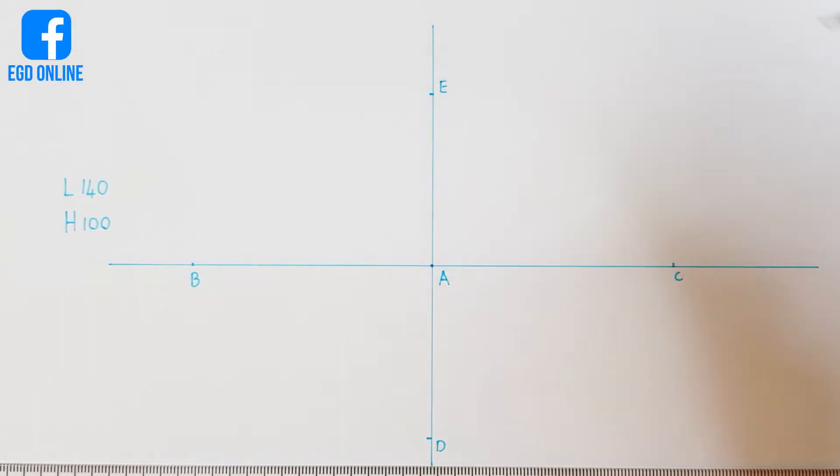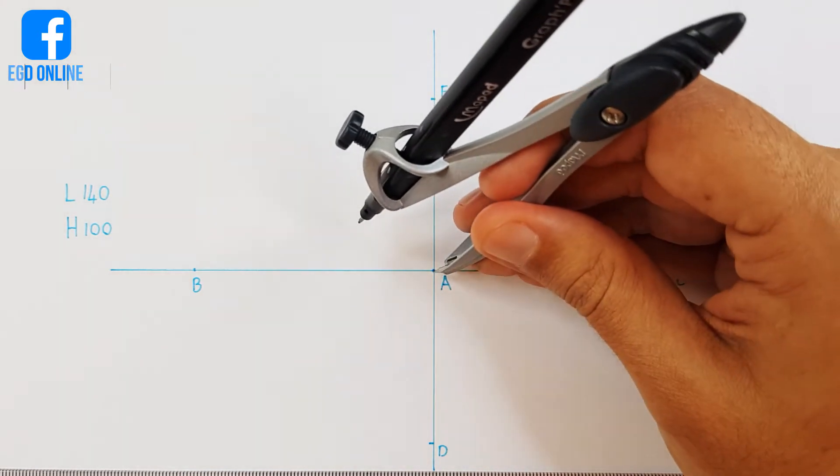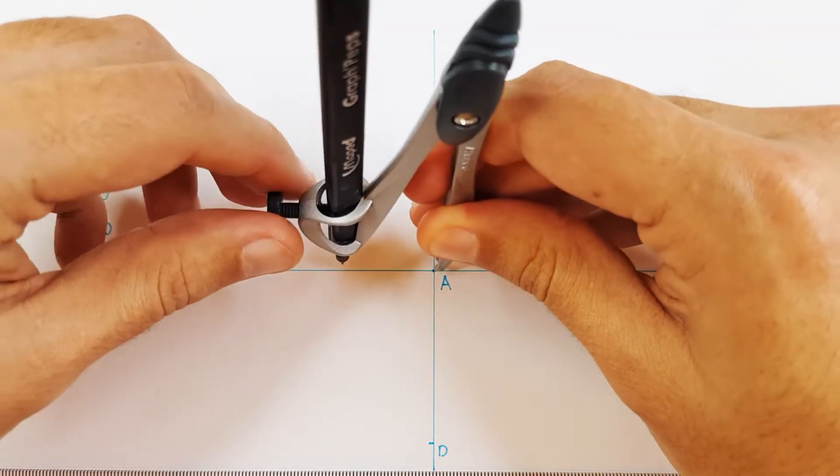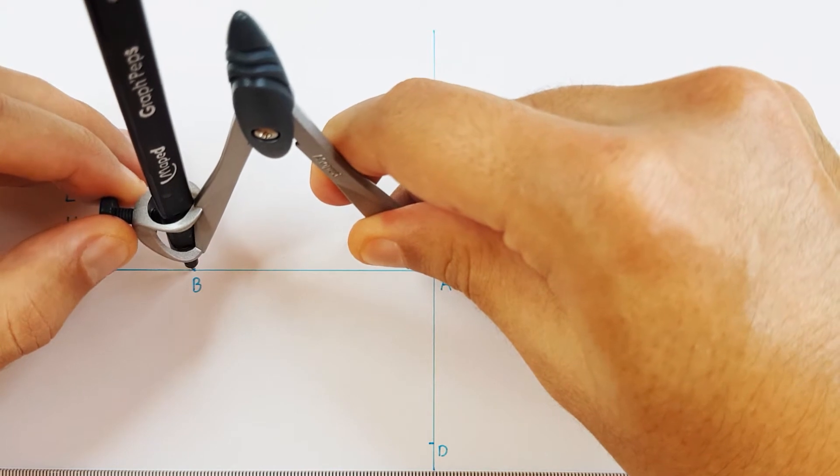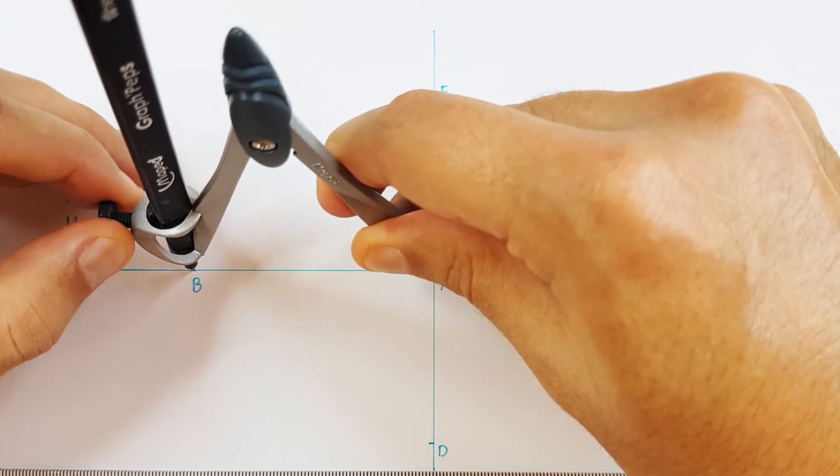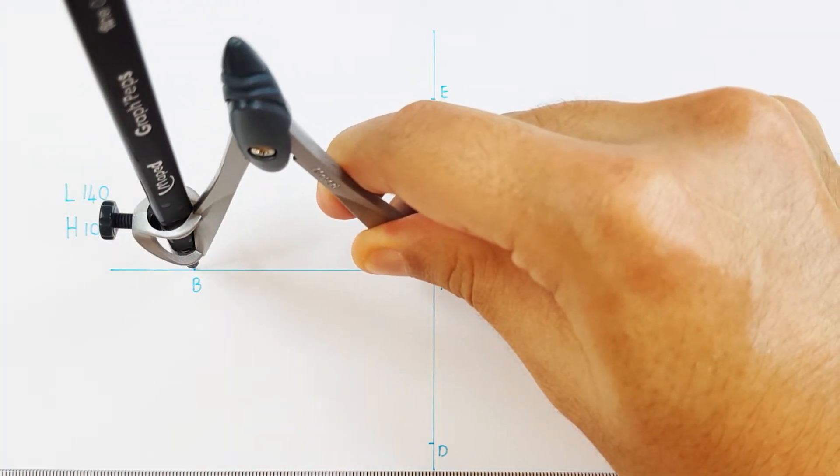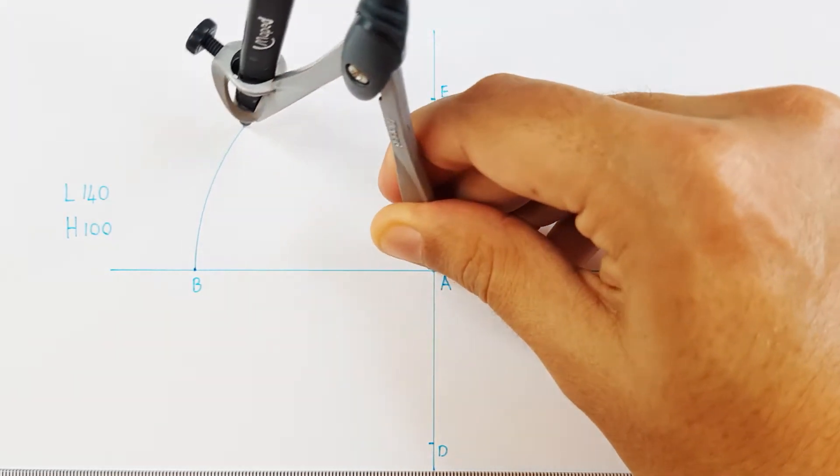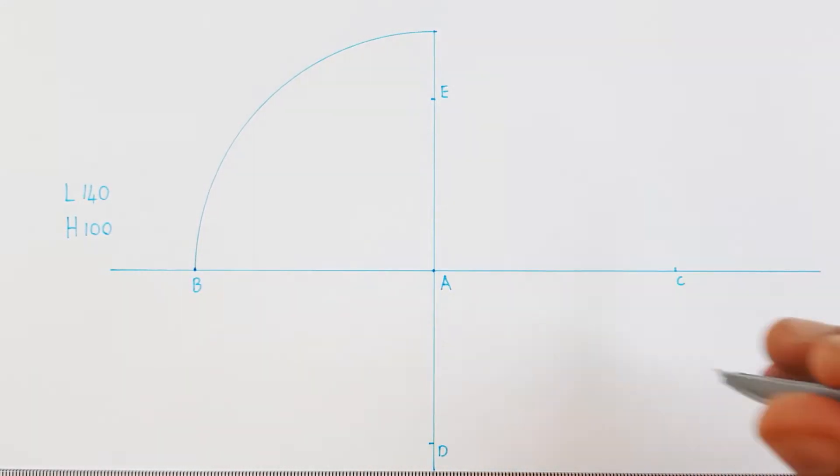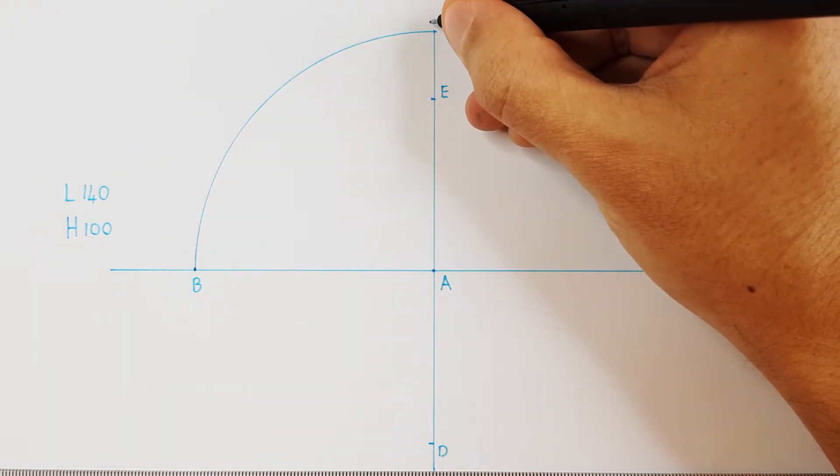Next I will place my compass on point A and adjust it to point B. I will then project point B onto my minor axis. I can label this point as point F.